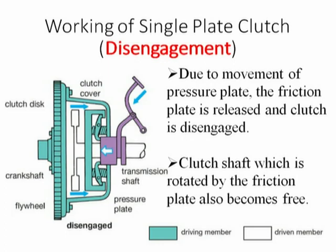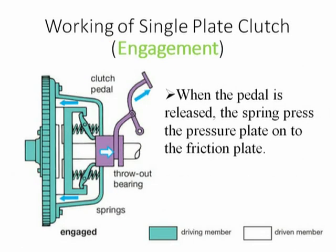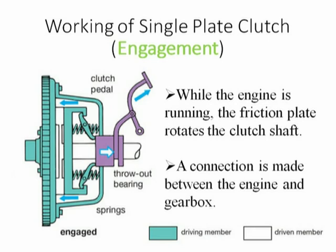Due to the movement of the pressure plate, the friction plate is released and the clutch is disengaged. The clutch shaft, which was rotated by the friction plate, also becomes free. During engagement, when we do not apply force on the pedal, the springs exert force and bring the pressure plate into contact with the friction lining on the clutch plate. Because of the force of the springs, there will be a firm contact, and power will be transmitted from the driver through the clutch assembly to the pressure plate, and in turn to the driven member through the driven shaft. While the engine is running, the friction plate rotates the clutch shaft continuously.